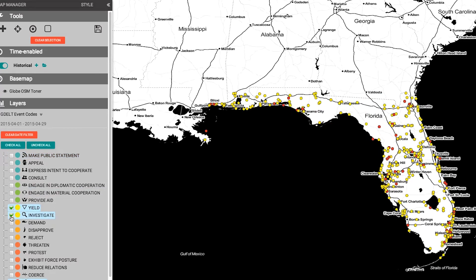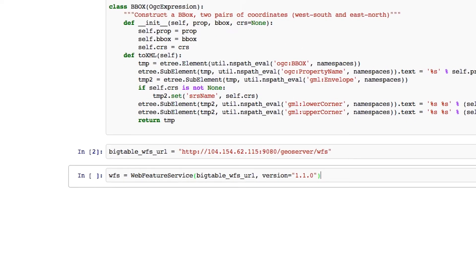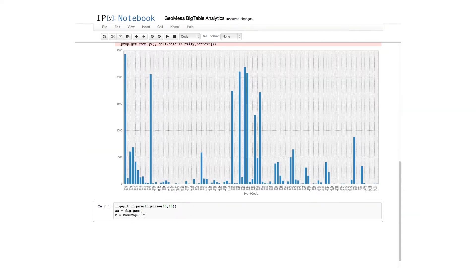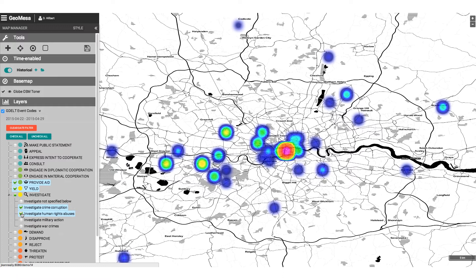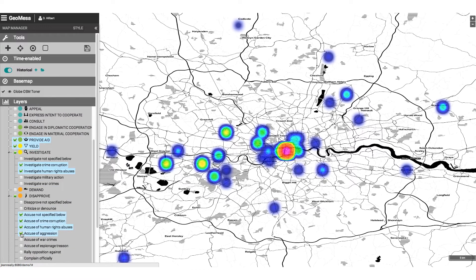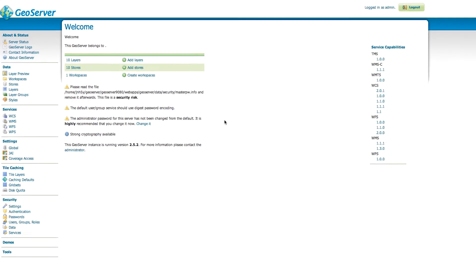GeoMESA provides a solution to the big spatial data problem by strategically indexing and distributing your data across the cloud. Now, your analytics can harness the full processing power of your cloud, and your maps can directly access all of your data.